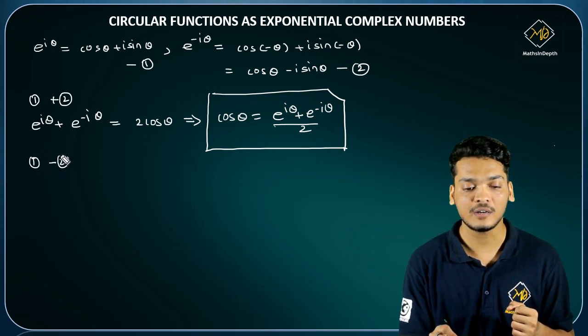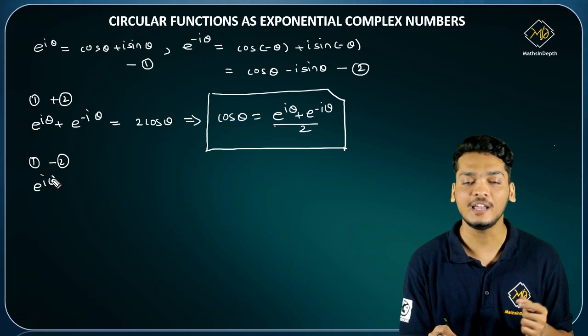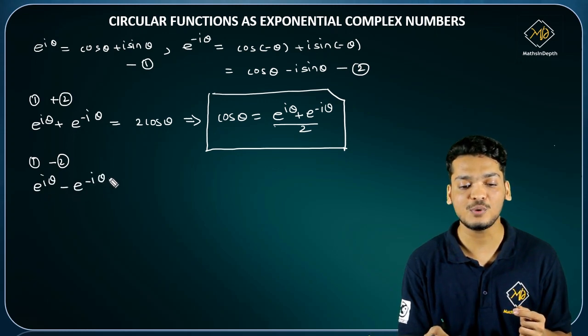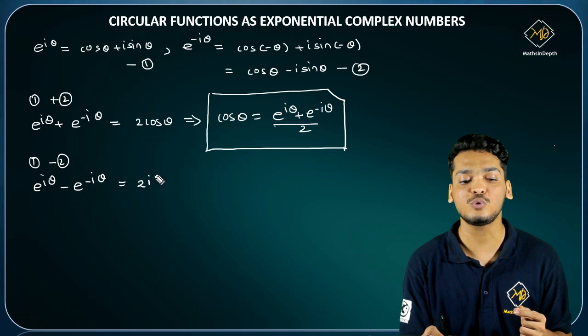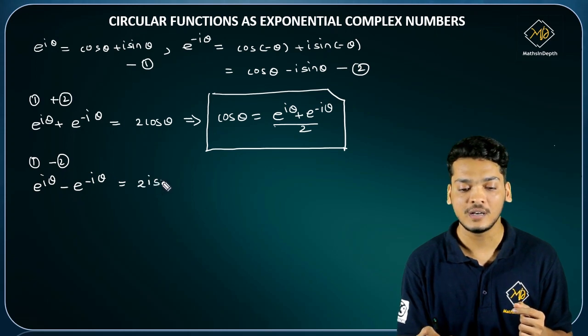Similarly, if we subtract equation 2 from 1, then I will get e raised to i theta minus e raised to minus i theta equals twice of i times sin theta.